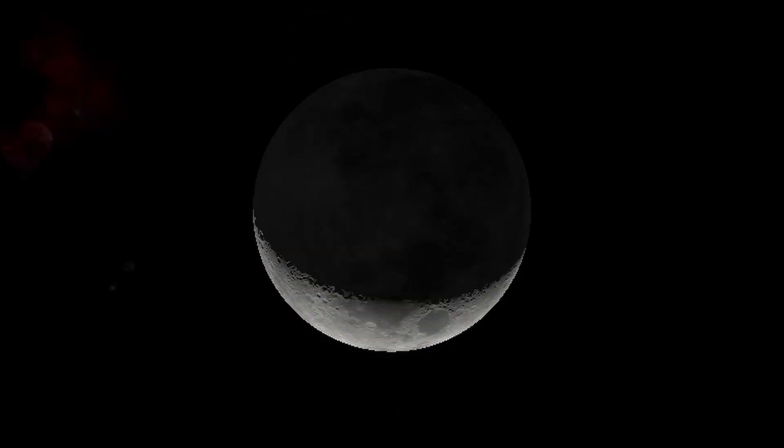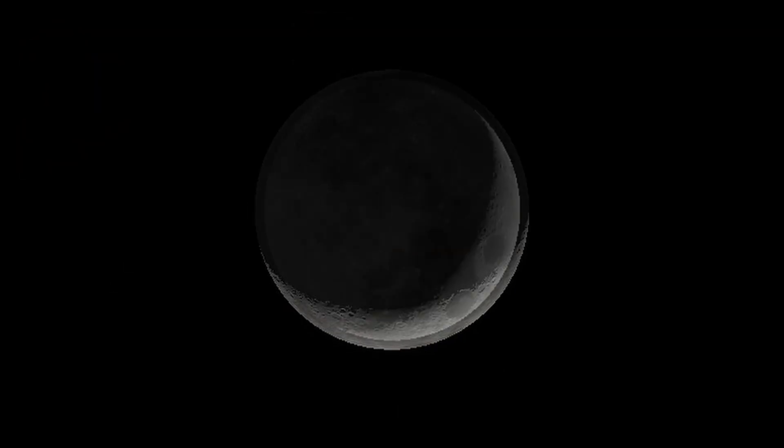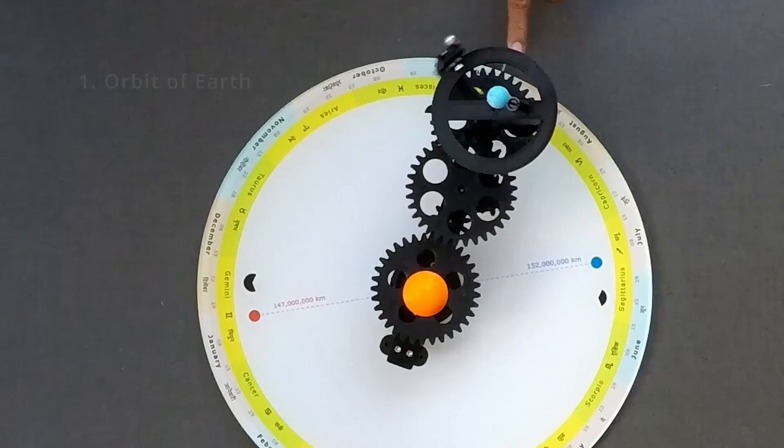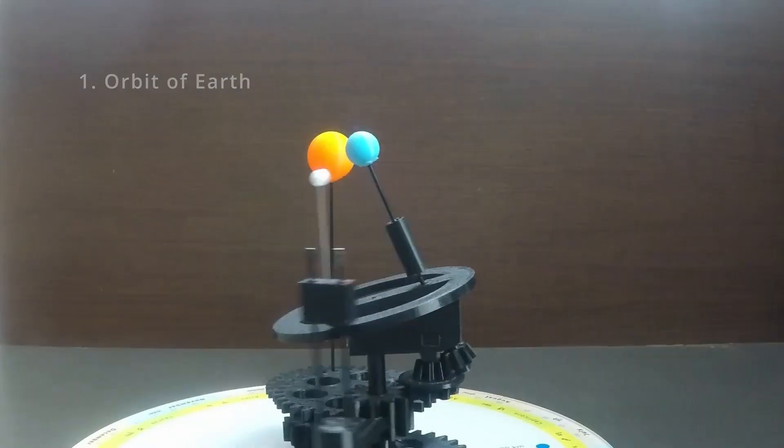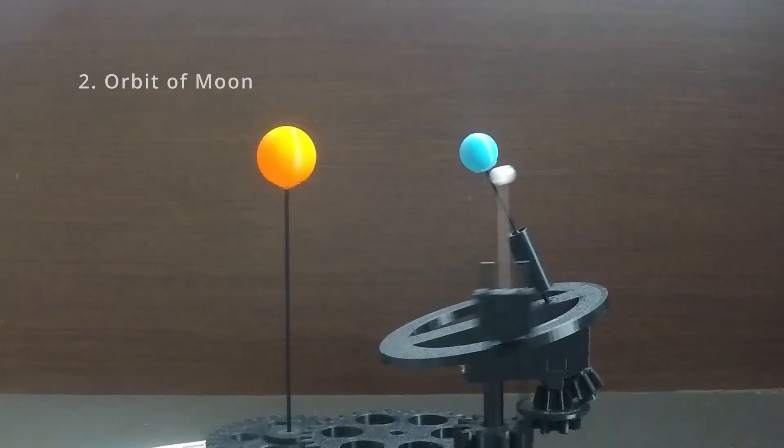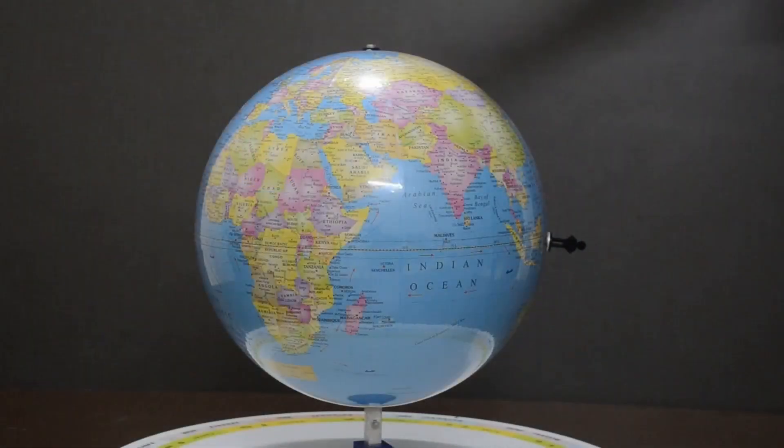Change in orientation of the crescent as seen from the earth can be attributed to three things mainly: Orbit of the earth, orbit of the moon, and latitude of the observer.